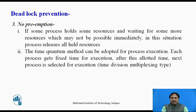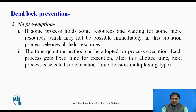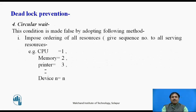Another condition leading to deadlock is no preemption. To make this condition false, we must make preemption possible. Whenever a process holds resources and is waiting for more, we require that it first release all currently held resources before making a fresh request. This is called deadlock prevention using circular wait as the main condition.